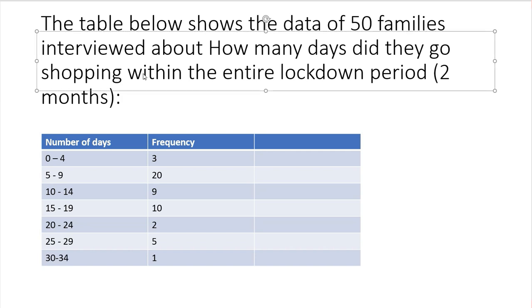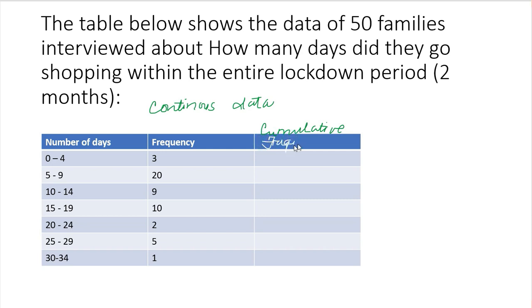Continuous meaning to say there is a range, continuous data. So quantitative continuous data. So the table below shows the data of 50 families interviewed about how many days did they go shopping within the entire lockdown period or the two months. So here are their answers. So let's go and make the cumulative frequency. So we have here cumulative frequency. So I need to change the ink, it's not clear. So cumulative frequency, and then let's start making the cumulative frequency table.